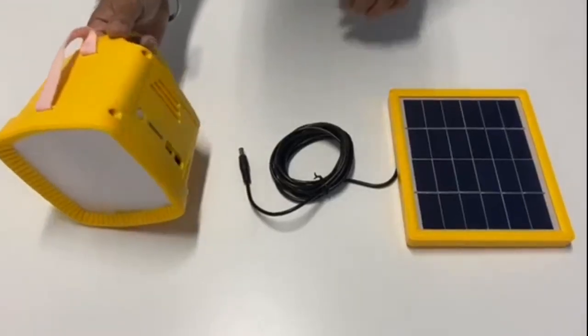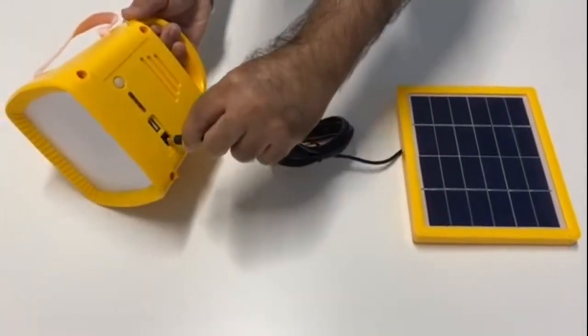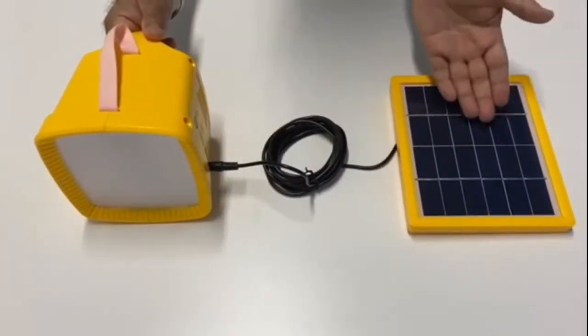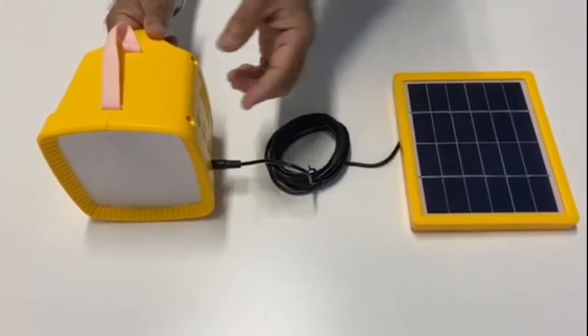The solar lantern can be charged from the solar panel under the sun. It can also be charged from a power bank or from the wall using the cable provided in the box.